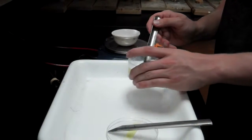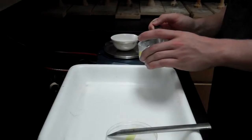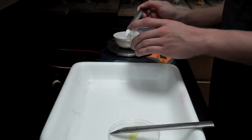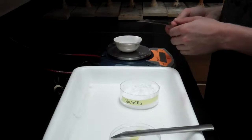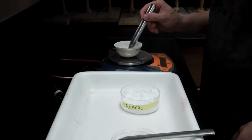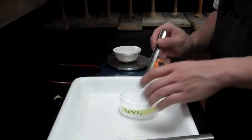We're over here measuring our evaporating dish and watch glass. We need the watch glass on there also. And then we're going to put in 2 to 3 grams of sodium hydrogen carbonate.